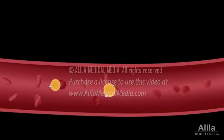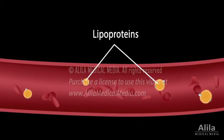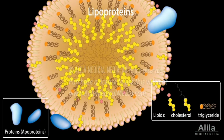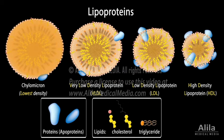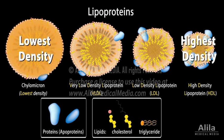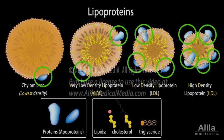Cholesterol and triglycerides are transported in blood plasma within large particles known as lipoproteins, composed of lipids and proteins. There are four major lipoprotein particles: chylomicrons, very low-density lipoprotein (VLDL), low-density lipoprotein (LDL), and high-density lipoprotein (HDL). They differ in lipid content, hence density, and have different sets of proteins and different functions.